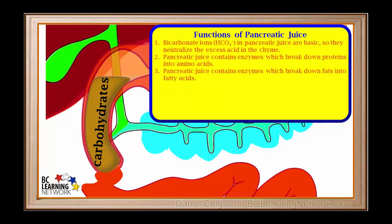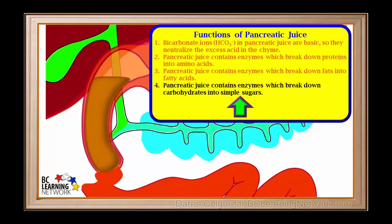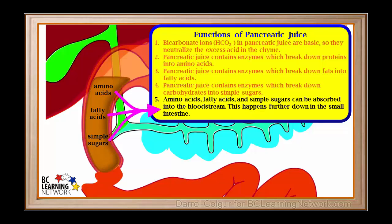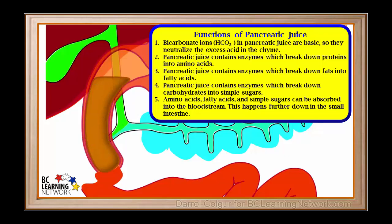Chyme from the stomach contains some carbohydrates that have not been broken down into simple sugars. These can include starches and more complex sugars. Pancreatic juice also contains enzymes which break down complex carbohydrates into simple sugars. These combine with the carbohydrates and through a series of chemical reactions break down these carbohydrates into simple sugars. The amino acids, fatty acids, and simple sugars that are produced by chemical digestion in the duodenum can be absorbed into the bloodstream. This happens farther down in the small intestine.